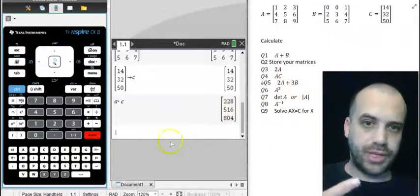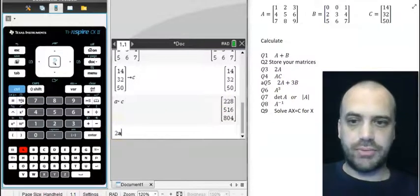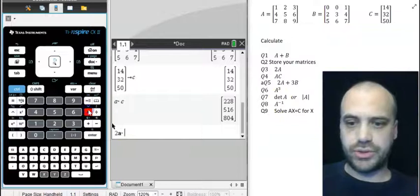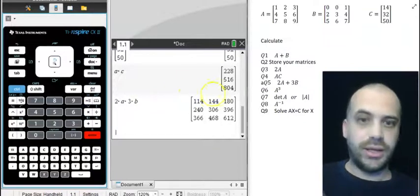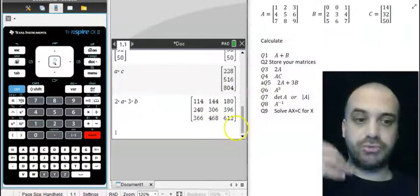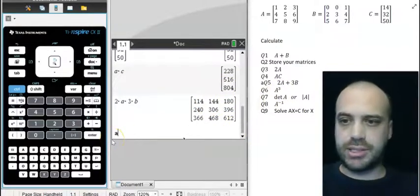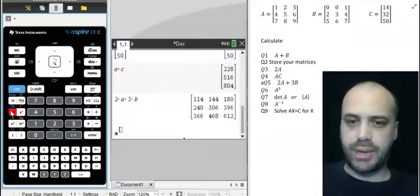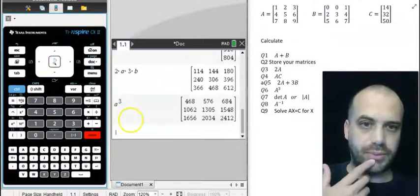If I want two A plus three B, it's going to be really straightforward. Two A times three B. And I get that. That'll take you quite a while if you're doing it by hand. If we want to cube a matrix, raise it to a power, it really is as simple as A to the power of something. There we have our answer there.